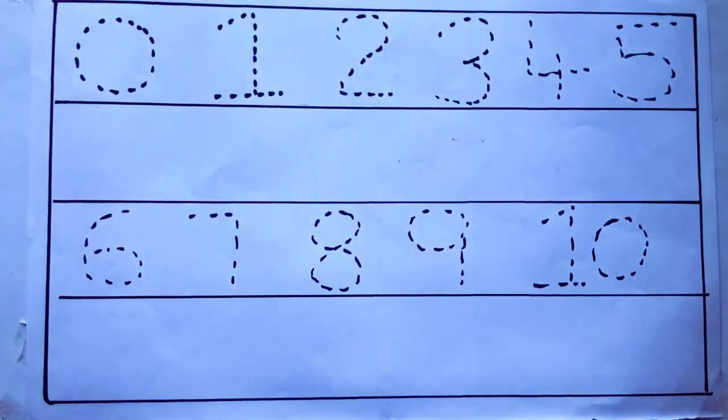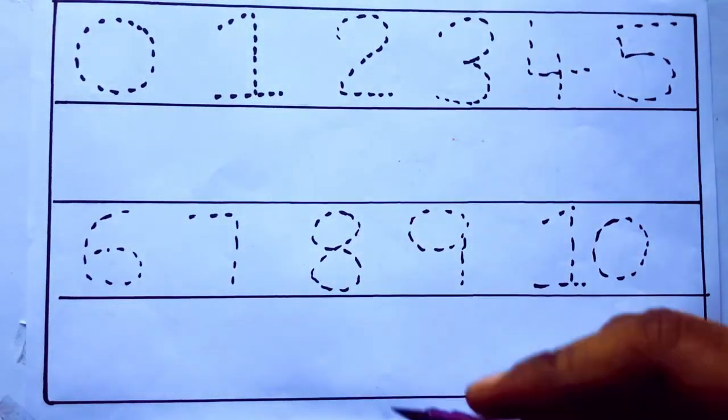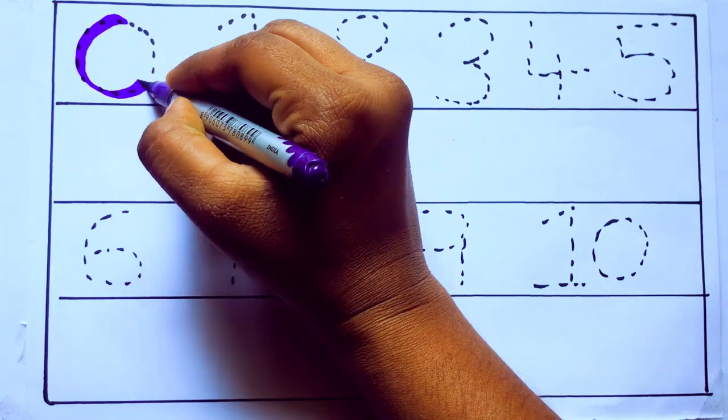Let's draw numbers. Violet color, 0, zero.